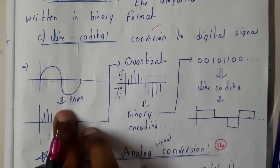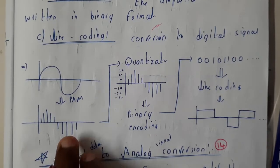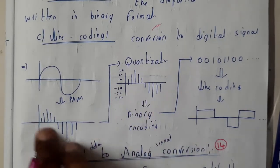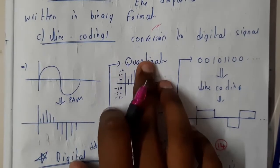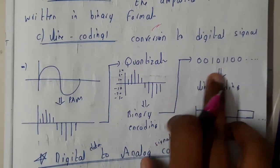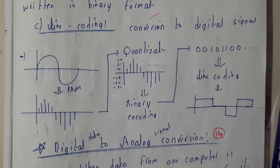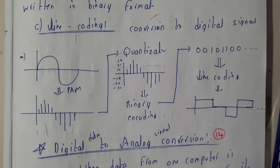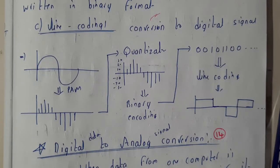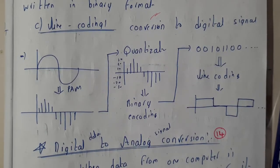Taking a small example: initially the analog signal is passed to PAM, and we get the sampling signal. This sampling signal is then passed to quantization to get the binary code. Once we get the binary code, it is passed to line coding to get the final digital signal. I hope everyone got a small idea. In the next tutorial, we will go through digital data to analog signal. Thank you for watching.